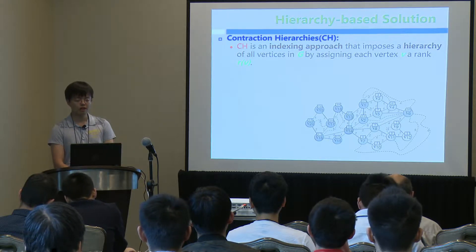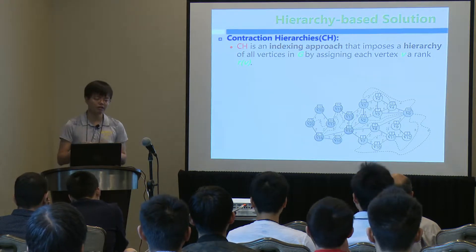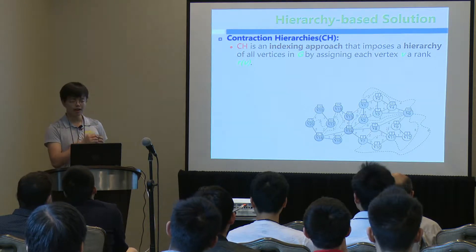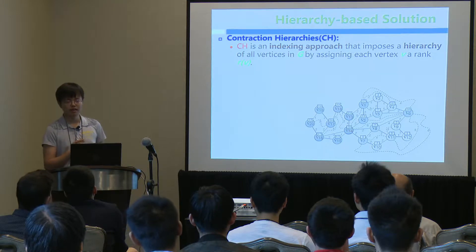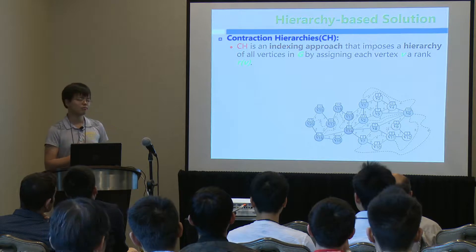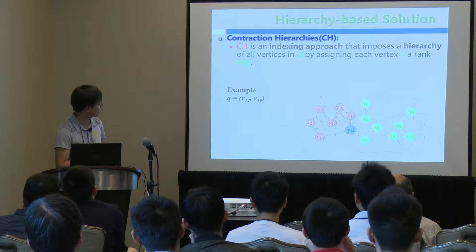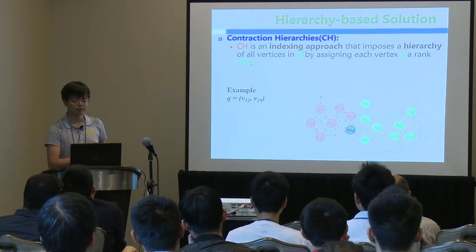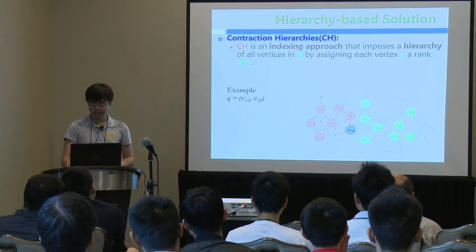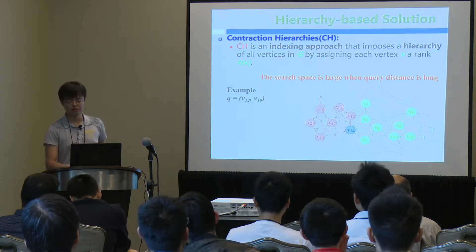Contraction hierarchy means we associate each vertex with a rank. In query processing, you can only search from low rank to high rank. To guarantee the result is the shortest path, contraction hierarchy adds some shortcuts on the original graph. Here is an example of query processing for vertex V12 and V19 in contraction hierarchy. We find that the search space is still very large when the query distance is long.